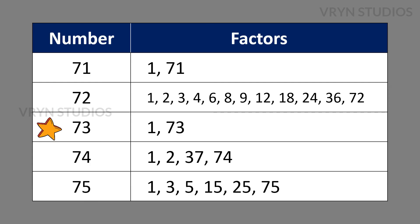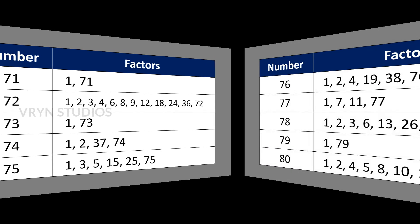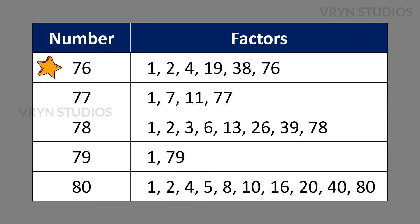The factors for the number 73 is 1 and 73. The factors for the number 74 is 1, 2, 37 and 74. The factors for the number 75 is 1, 3, 5, 15, 25 and 75. The factors for the number 76 is 1, 2, 4, 19, 38 and 76.